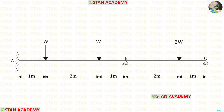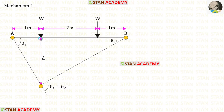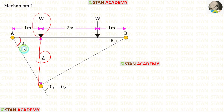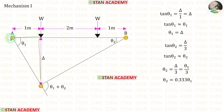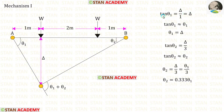Now let us make the first mechanism. In this mechanism, we are going to assume that the third plastic hinge occurs under this point load. Let us keep the virtual displacement under the load as delta, this angle as theta1, and this angle as theta2. So this angle should be theta1 plus theta2. Taking the left triangle, tan theta1 equals delta upon 1, which is delta. Since the value of tan theta1 is very small, theta1 is approximately equal to delta.